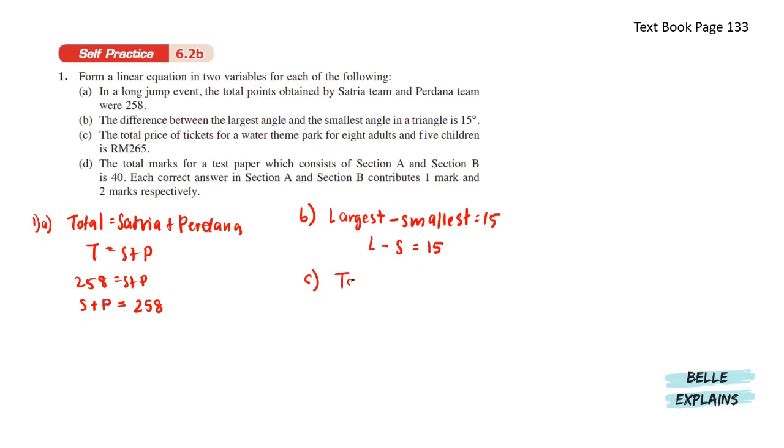Next, the total price of tickets for a water theme park for eight adults and five children is RM265. The sum of eight adults and five children is 265. So represent that with A and C respectively. Here we have 8A plus 5C equals 265.